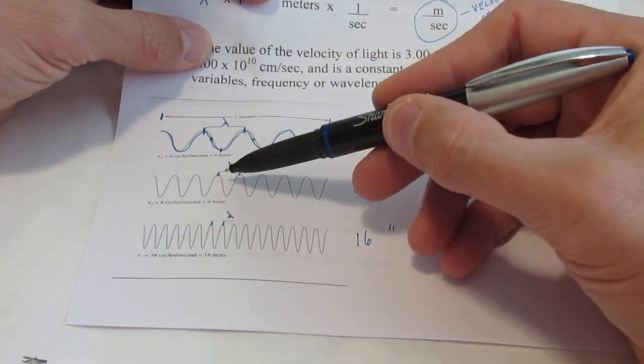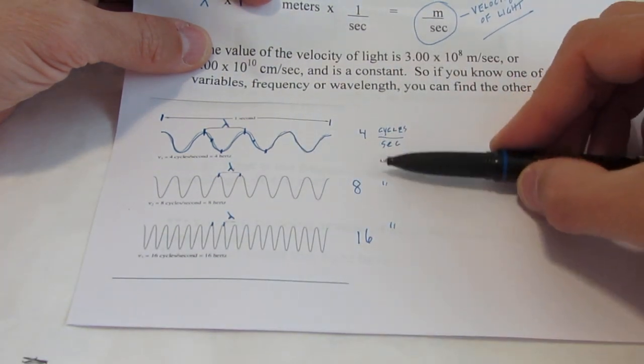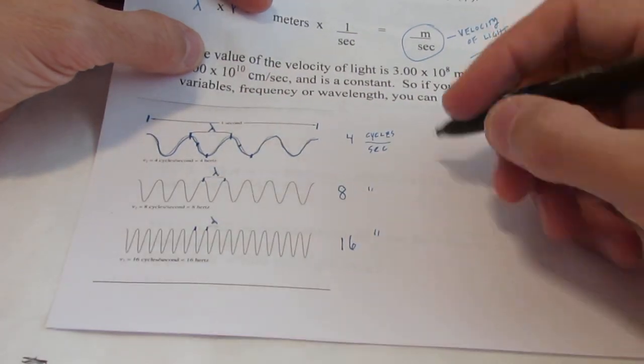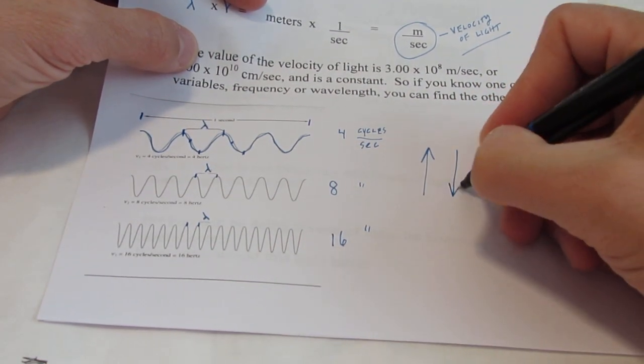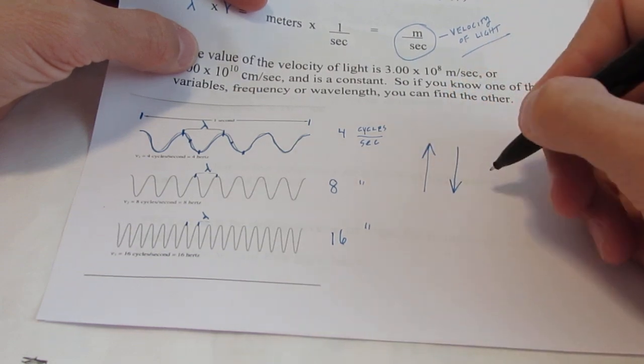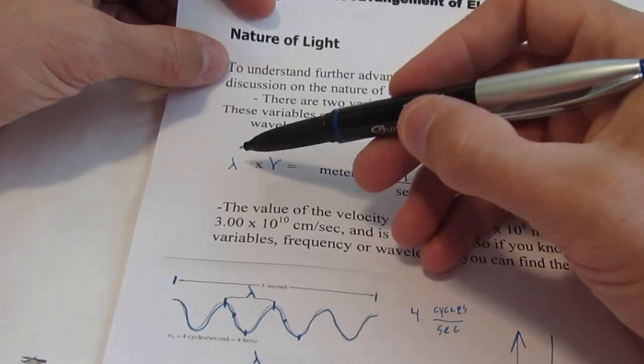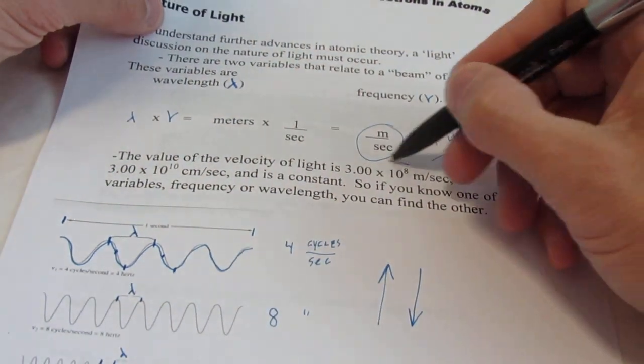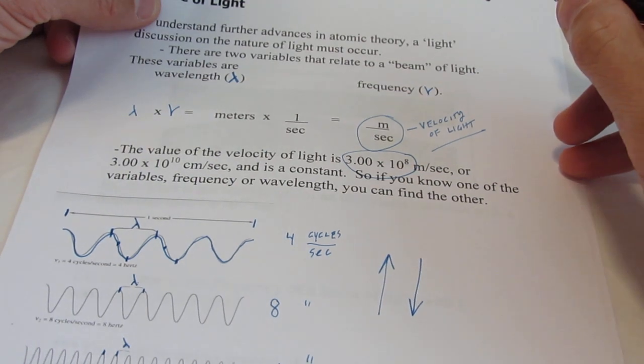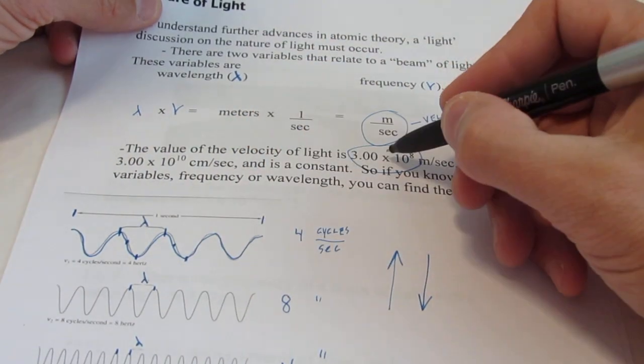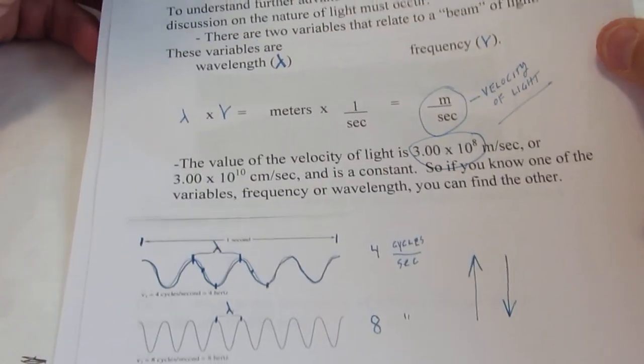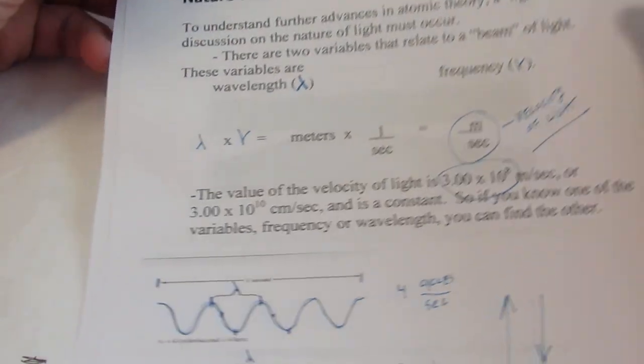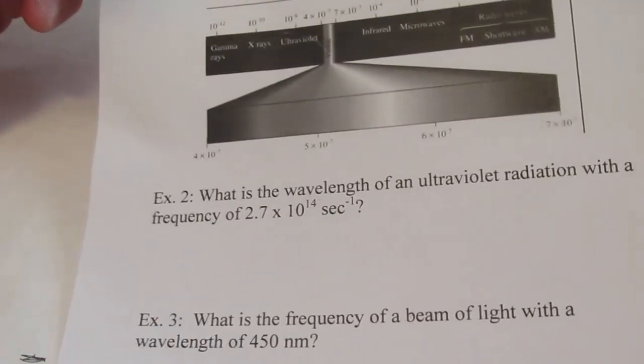Now the important point here is this. As wavelength gets smaller, frequency increases. We call that an inverse relationship. When one goes up, the other goes down and vice versa. And that's an important relationship. So as wavelength gets bigger, frequency gets smaller and that makes sense because the product of the two always has to equal the same number. So if one gets bigger, the other has to get smaller so we can equal that constant. Now once again, if I know one of these two, since the velocity of light is a constant, I should be able to solve for the one that's missing.